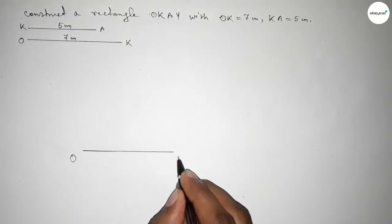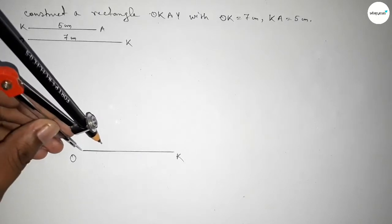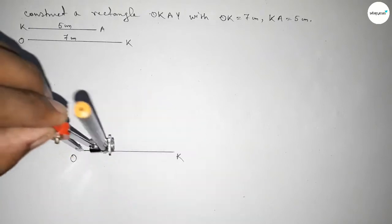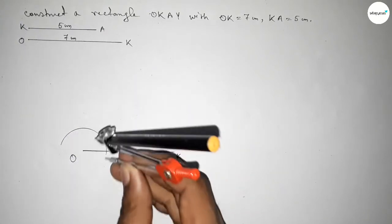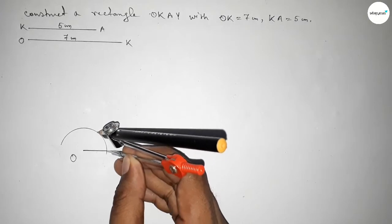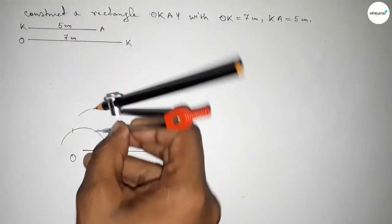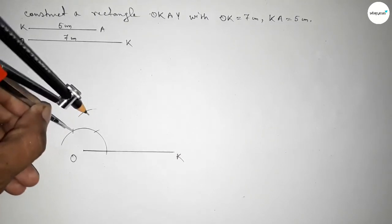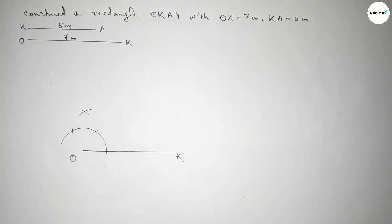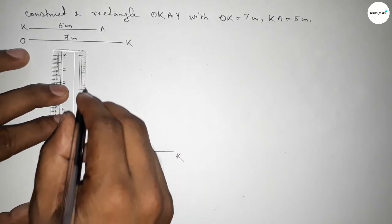Taking point O and point K, we now have to draw a 90 degree angle at point O. Putting the compass and taking any length, drawing an arc. Again putting the compass with the same length and cutting here, then putting the compass here and cutting again, drawing an arc with the same length, and putting the compass here to cut — both curves intersect at a point.